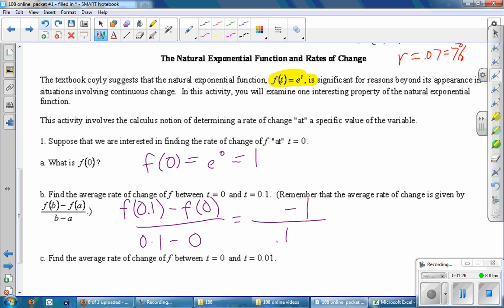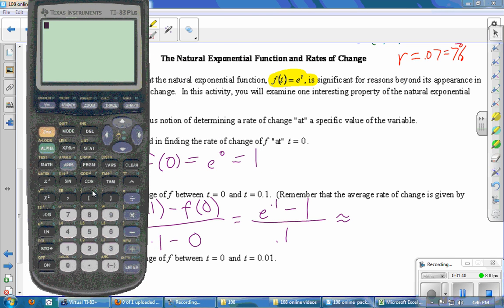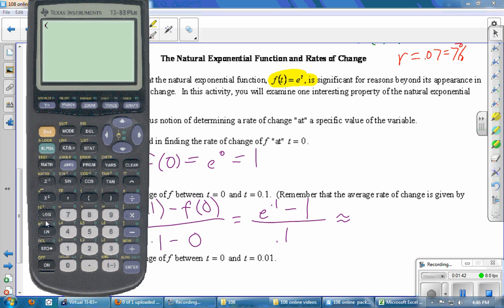On the bottom, it's just 0.1. Minus f of zero we just found is one. So really the only thing we need to do is find e to the 0.1. On the calculator, parentheses around the top, second e to the 0.1, close the parentheses, minus one, close the parentheses, divide by 0.1, and we get 1.0517.